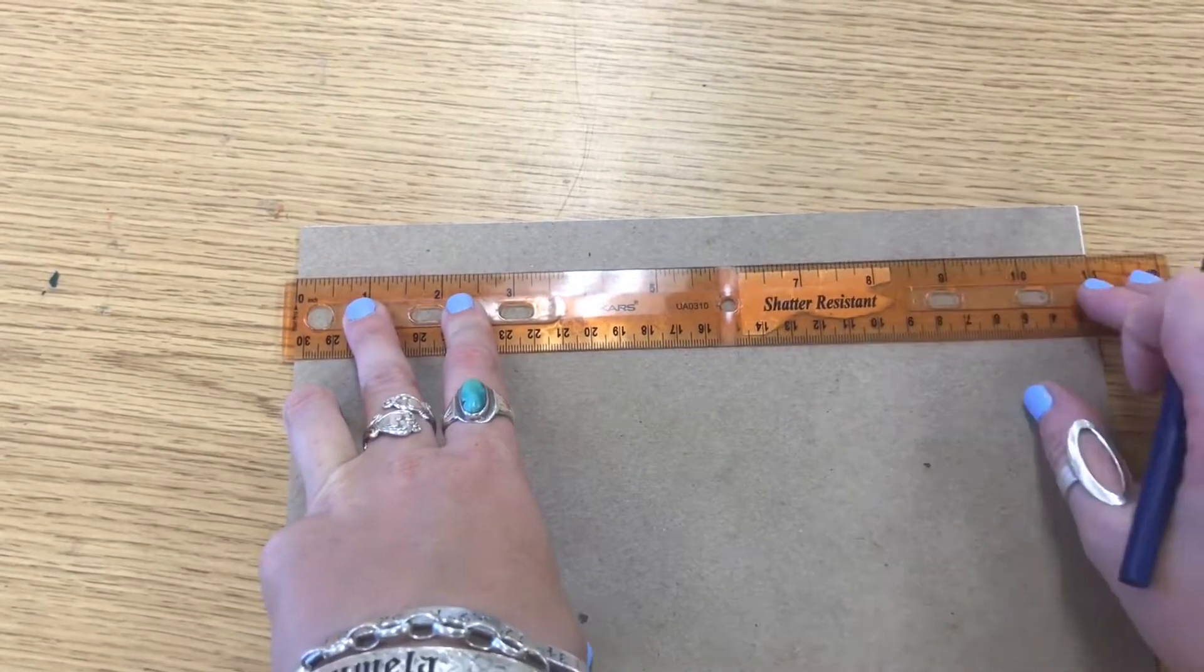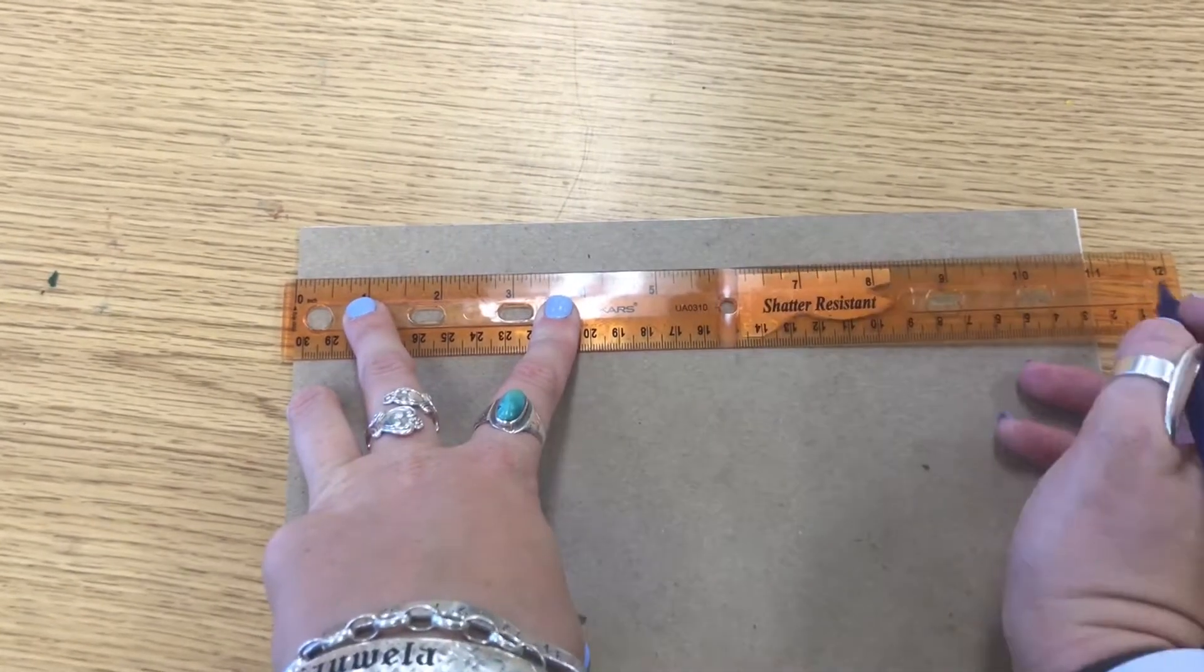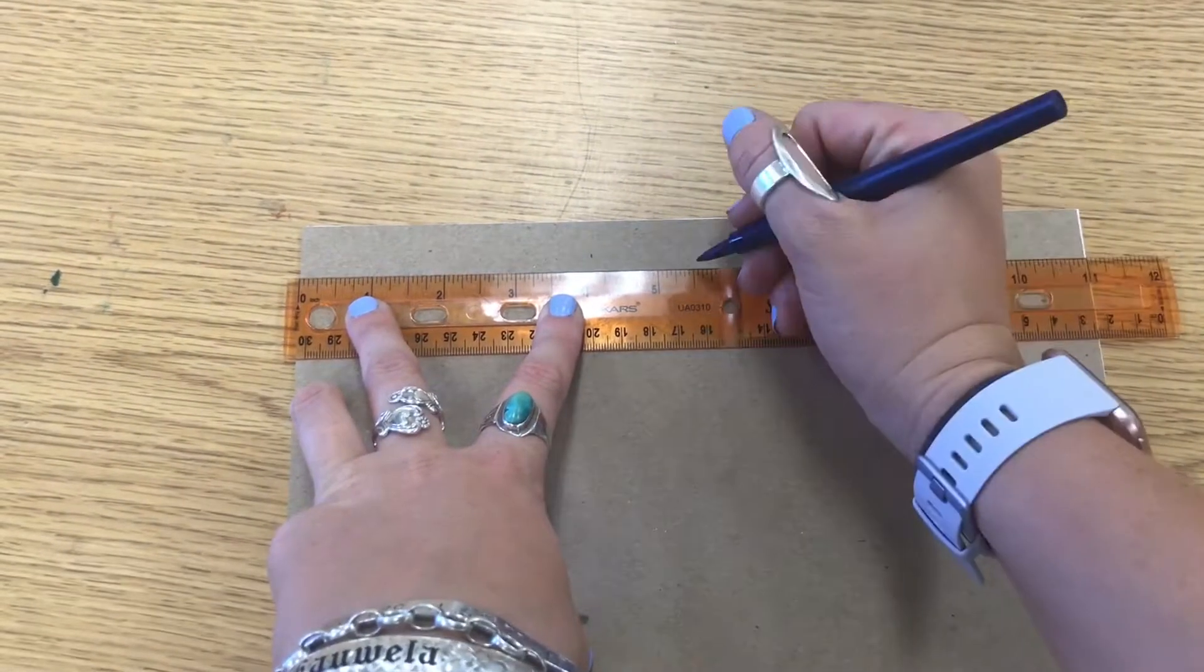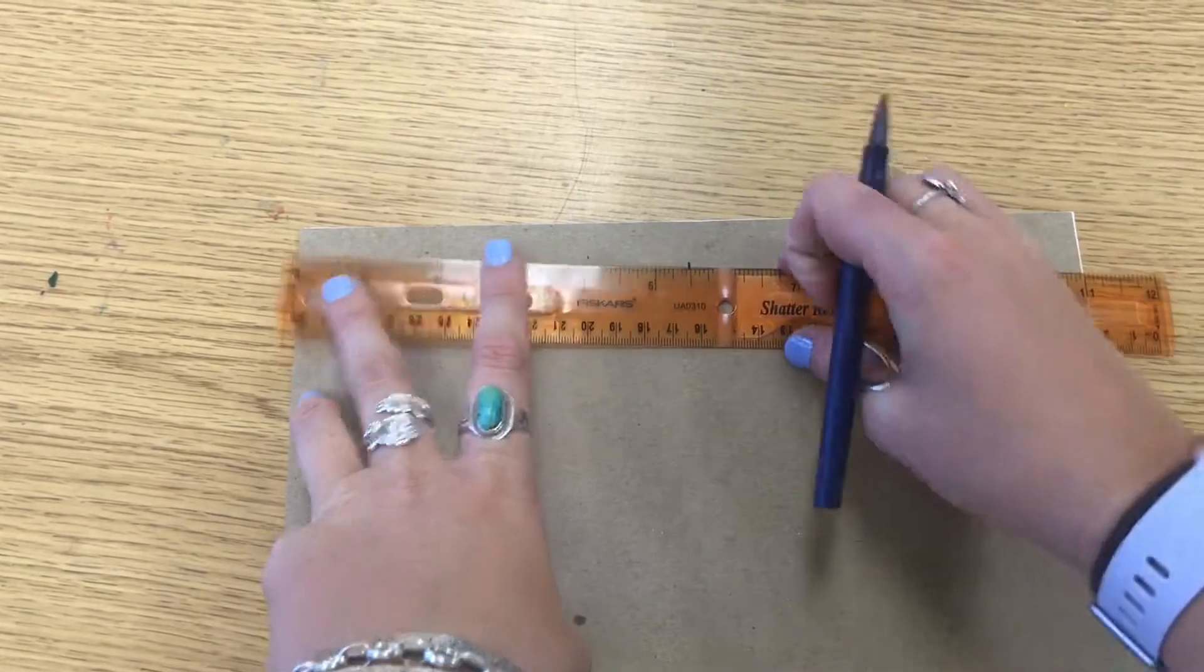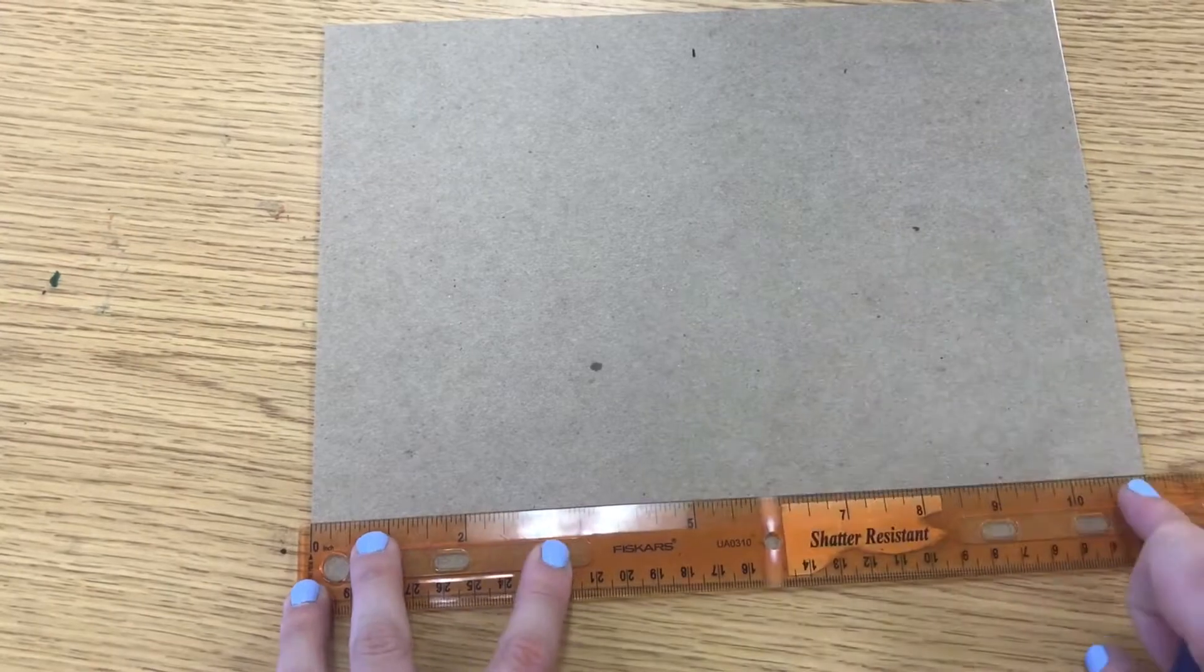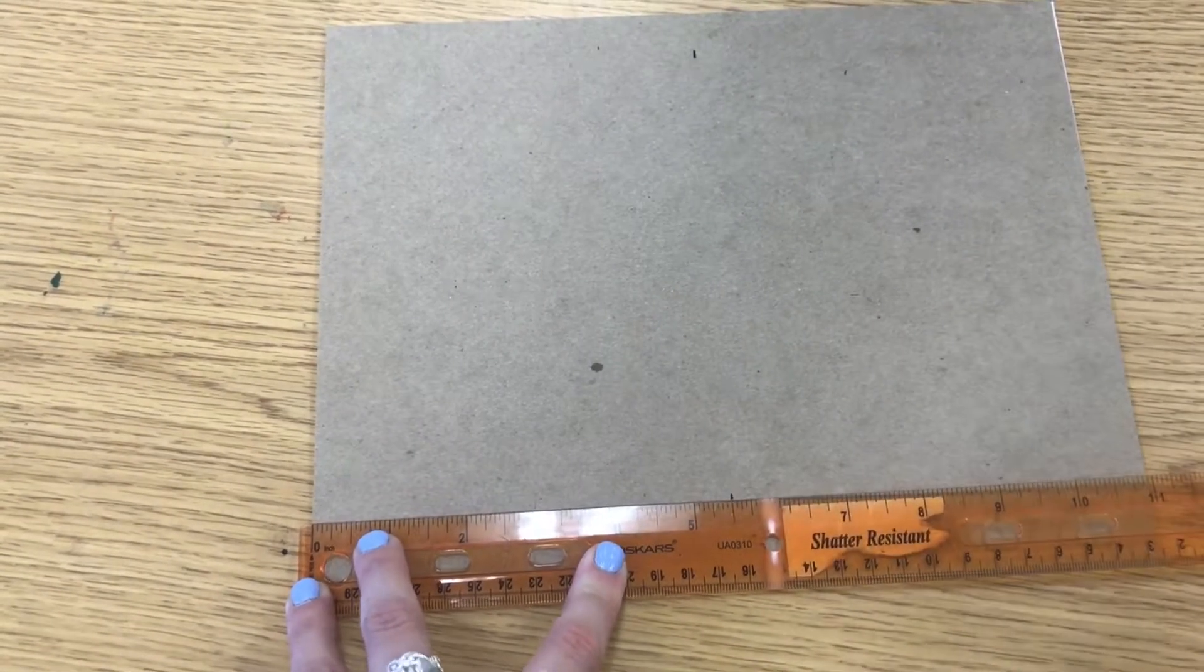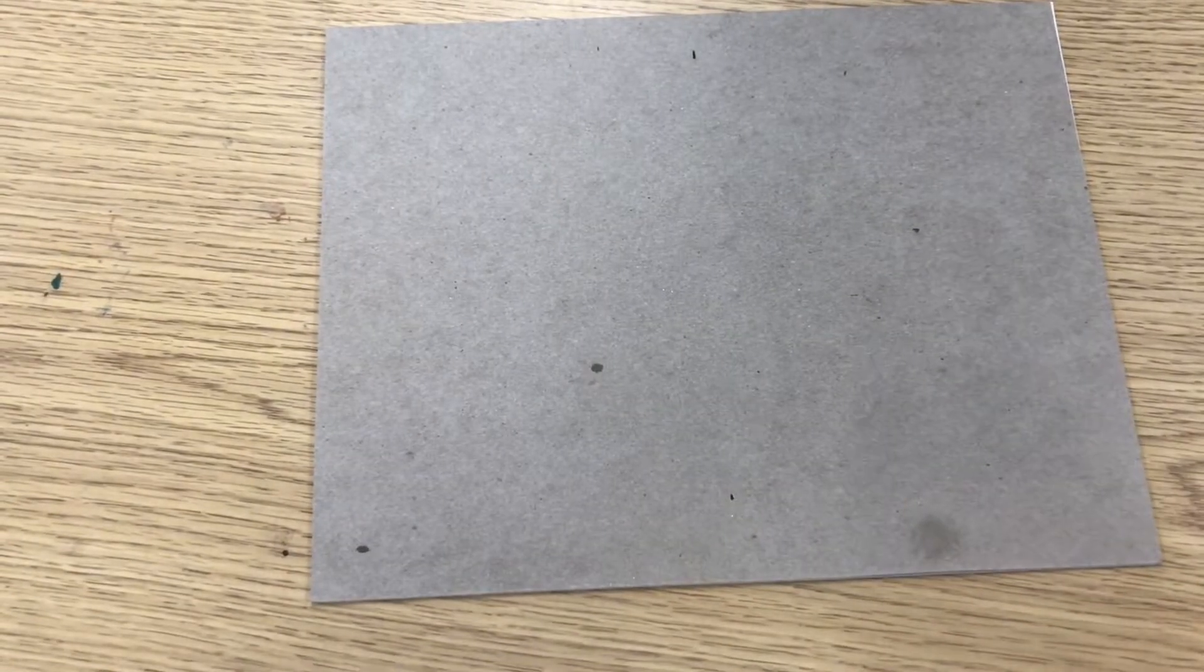So you'll line up the zero with the edge of your cardboard and then measure it. It should be 11 inches and we're going to mark it at the halfway point, which is five and a half. So you're going to put a little mark there and then do the same exact thing to the bottom. It's 11 inches and you're going to mark where the halfway point is, which is five and a half.